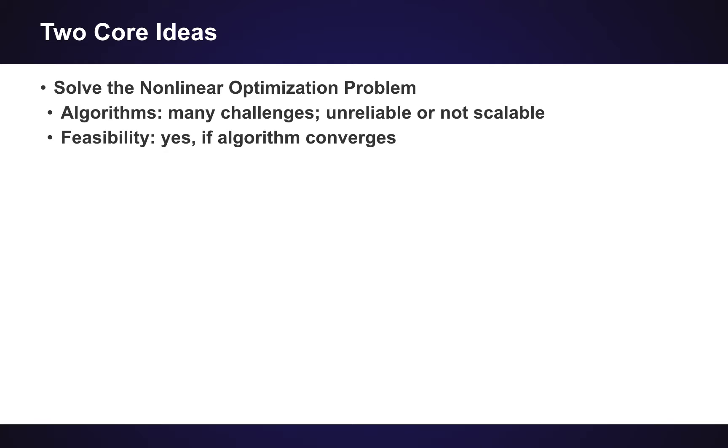So there are kind of two core ideas for how you can solve generic non-linear optimization problems. You can take the problem in its natural form and try to solve it directly, and that presents a number of challenges. So the algorithms have different properties. They can be unreliable or not scalable. But the good news is that if they converge, they will give you a feasible solution to your original problem.